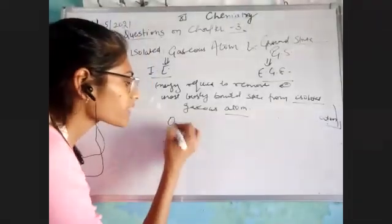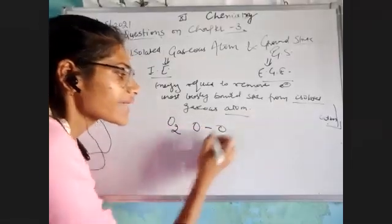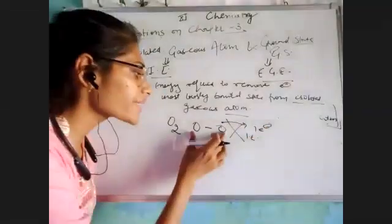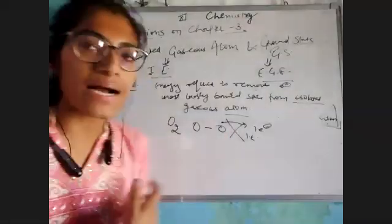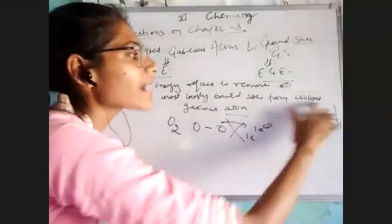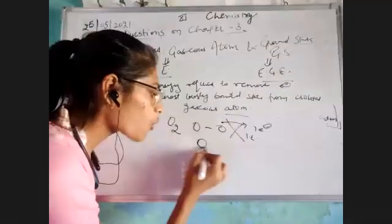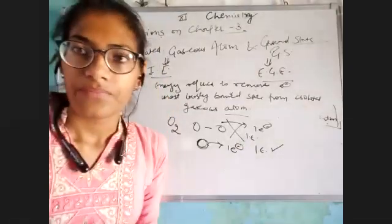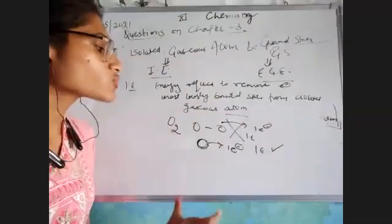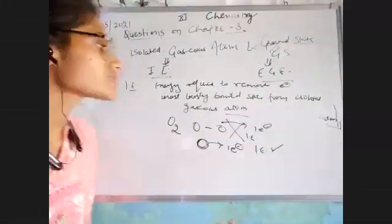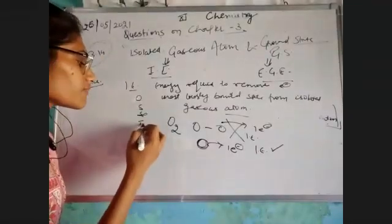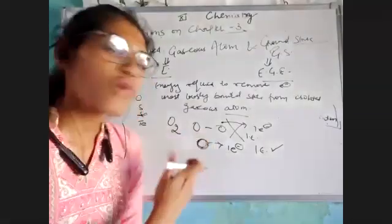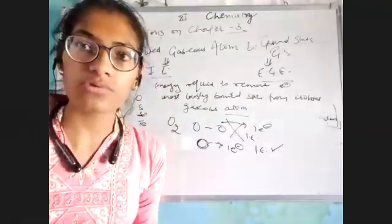For example, if we remove an electron from O₂ (a molecule), that is not ionization enthalpy, because the definition requires an isolated gaseous atom. So for oxygen, it must be in atomic form (O) for the removal to count as ionization enthalpy. That's why in the periodic table we name simply the atom — oxygen, sulfur, selenium, tellurium — and remove the electron from the isolated gaseous atom.